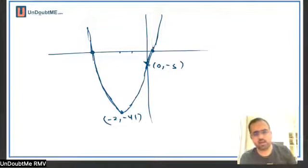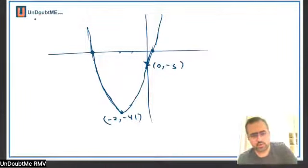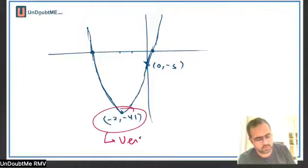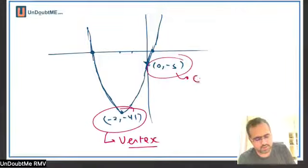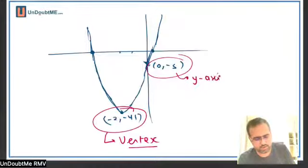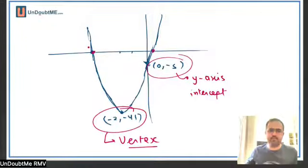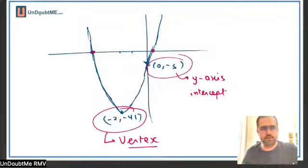And my graph will be done. Is it clear now? This will be the y-axis intercept and these will be the two roots. I got everything — I just had the x-axis wrong.